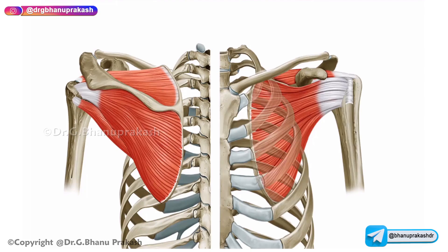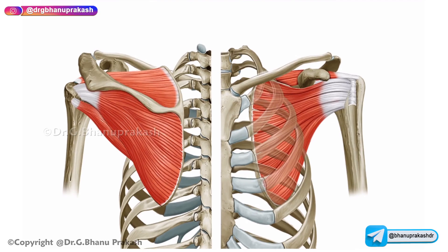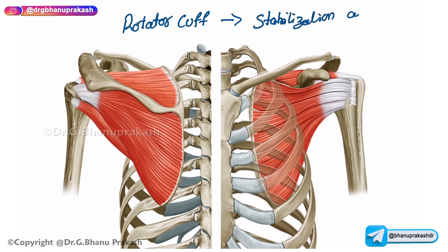In this video we are going to discuss the muscles of the rotator cuff. The main function of the rotator cuff muscles in the upper limb is stabilization of the shoulder joint. The stability of the shoulder joint mainly depends upon the integrity of these muscles.